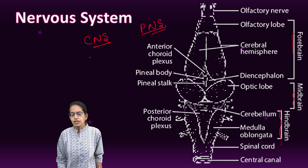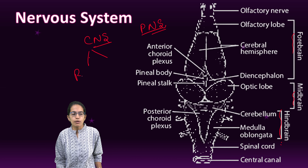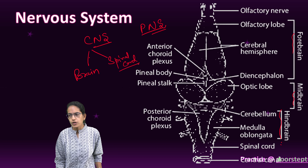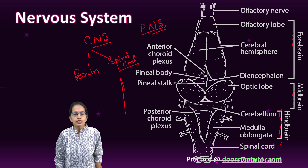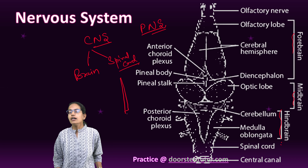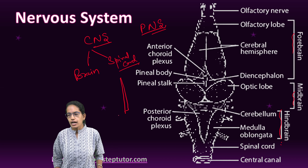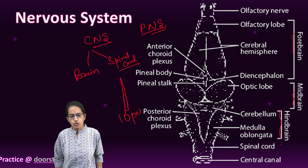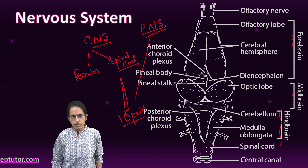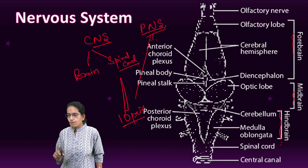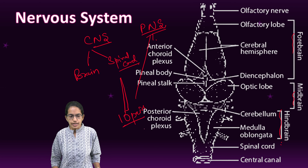The nervous system comprises the CNS and PNS — the central nervous system and the peripheral nervous system. The central nervous system includes the brain plus the spinal cord. The spinal cord is located in the vertebra and joins with the medulla oblongata via the foramen magnum. There are 10 important pairs of the peripheral nervous system present in the case of the frog.